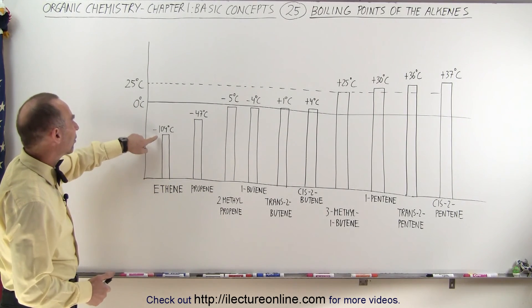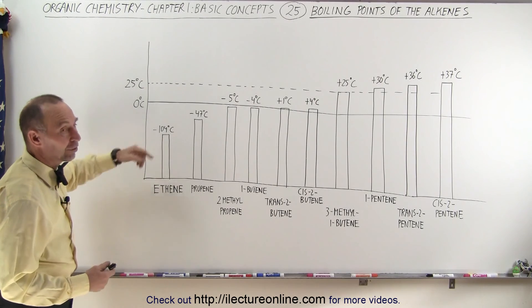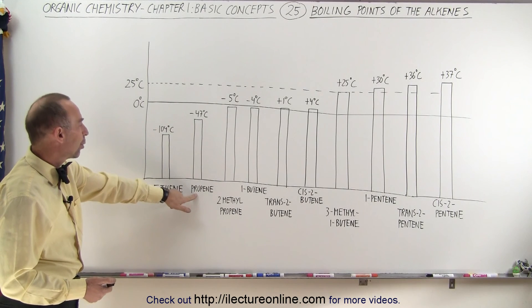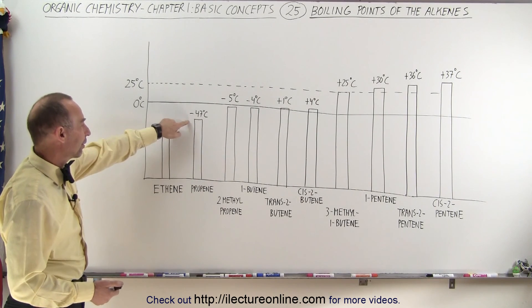For ethene, the boiling point is at minus 104 degrees centigrade, so under most circumstances you would find it in a gaseous state. Same for propene. Propene boils at a very low temperature,